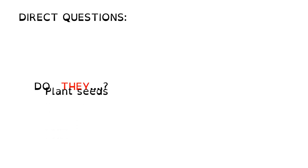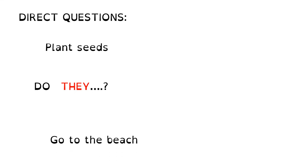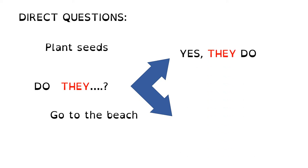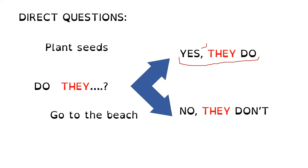Now we are going to see yes/no questions. Do they plant seeds? Or do they go to the beach? We have two possible answers: yes, they do, or no, they don't. Remember, we have to say the complete sentence — not only 'yes', but 'yes, they do', or 'no, they don't'. We use 'they' because in the question you have 'they'.